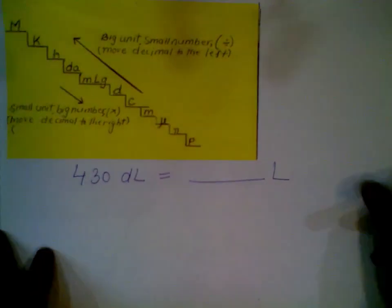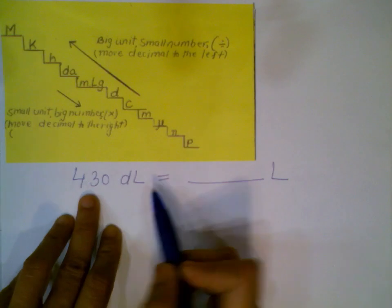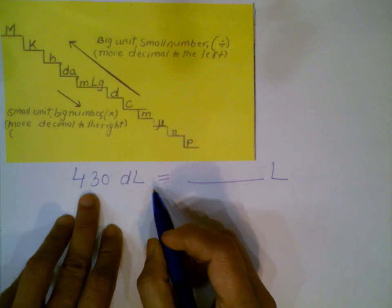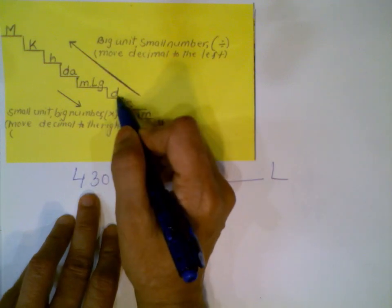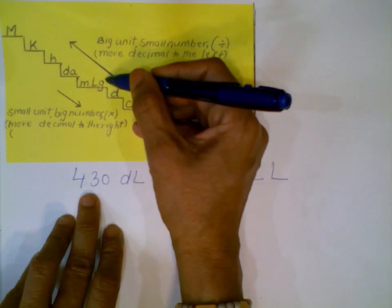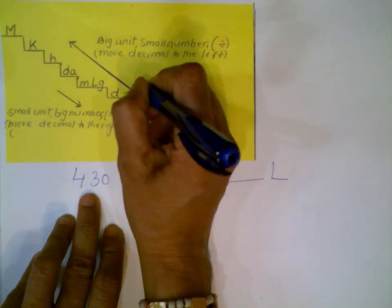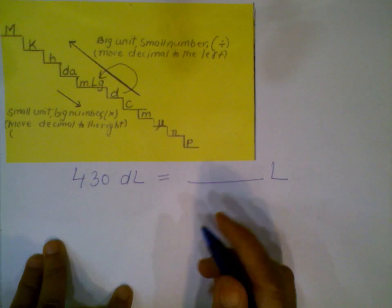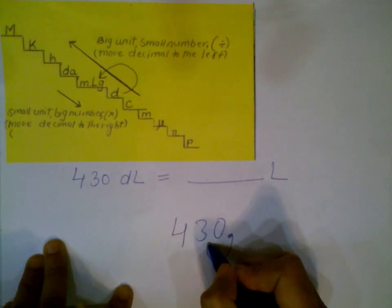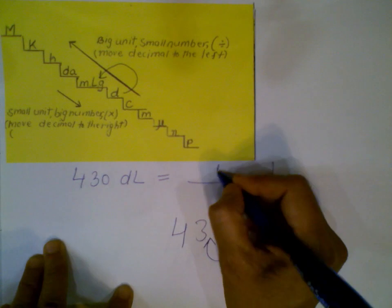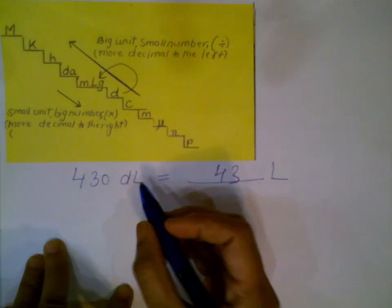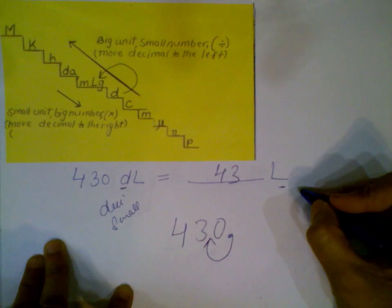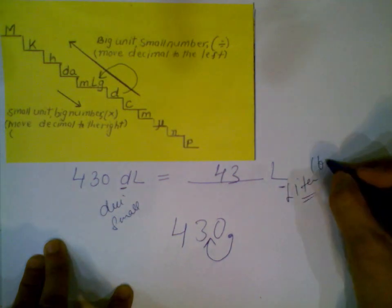Next: convert 430 deciliters to liters. On the stair step, deci is here and liter is one step up to the left. Moving one place to the left, 430 becomes 43 liters. Deci is a smaller unit than liter, so the bigger unit liter requires a smaller number.